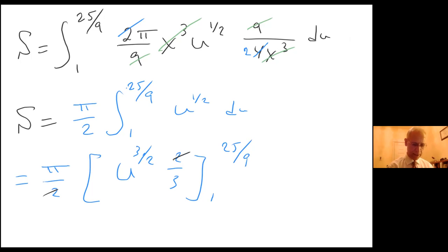Let me go to the next page. I'm going to have π over 3 u to the three halves. So S equals π over 3 u to the three halves from 1 to 25 over 9.